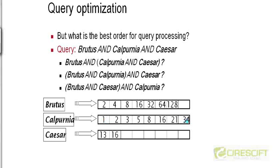Suppose that these are the three postings lists for Brutus, Calpurnia, and Caesar. By looking at these postings lists, can we figure out which of these three alternatives is going to require the least effort in terms of time? One thing we can notice is that the Caesar postings list has just two values. If we take the intersection of Caesar with any other postings list, the answer list cannot be larger than two, because the answer list has to contain elements of both Caesar and whichever other list you are intersecting with. But because Caesar has only two elements, the answer list cannot be any larger than two.